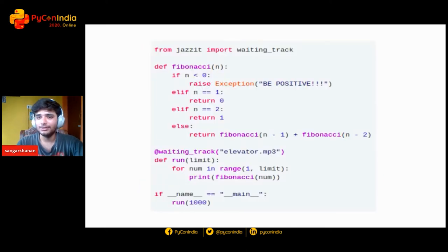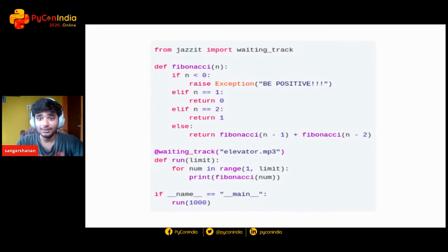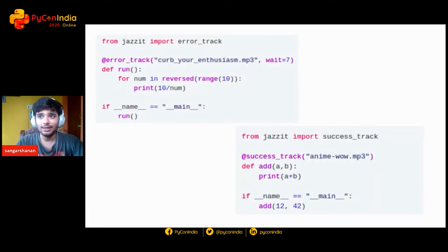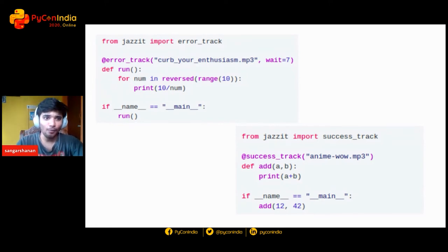Here's the code. You just do pip install jazzed to install it in your system. Then you import painting track and use that as a decorator in your function, passing it an MP3 file, so when the script runs it plays that file in the background. There are also other decorators — like when your script fails or when it succeeds, it can play any kind of music. For example, on error track plays Curb Your Enthusiasm, and on success it plays the anime wow soundtrack.